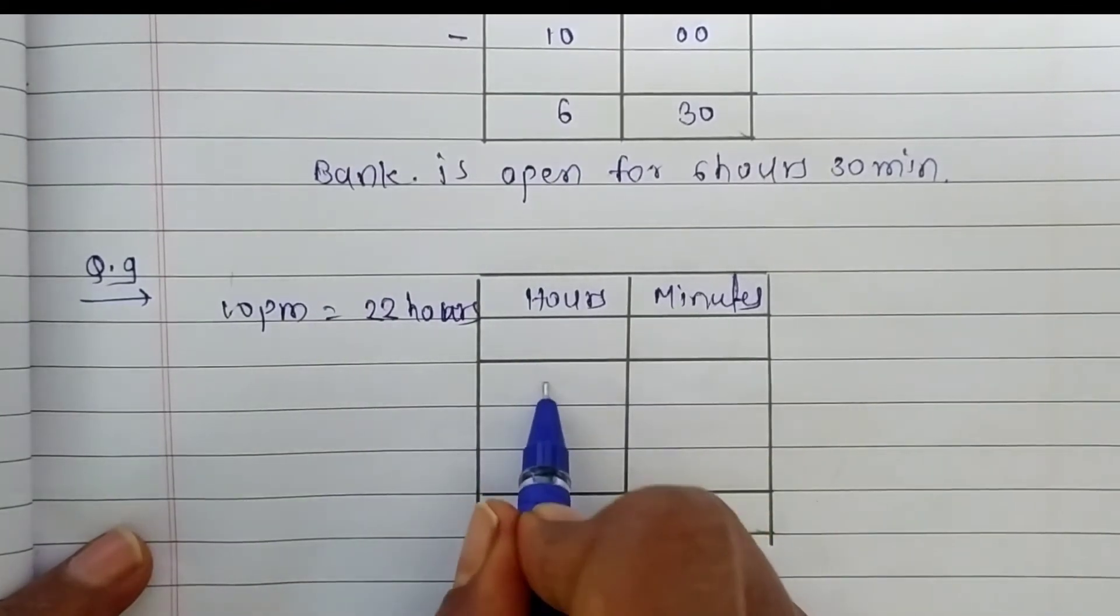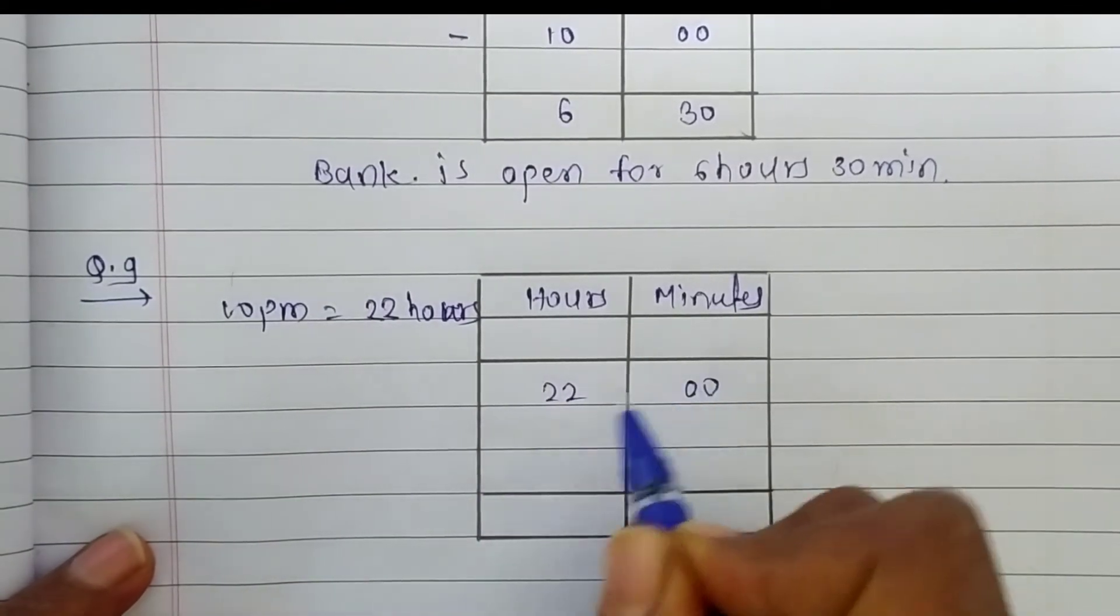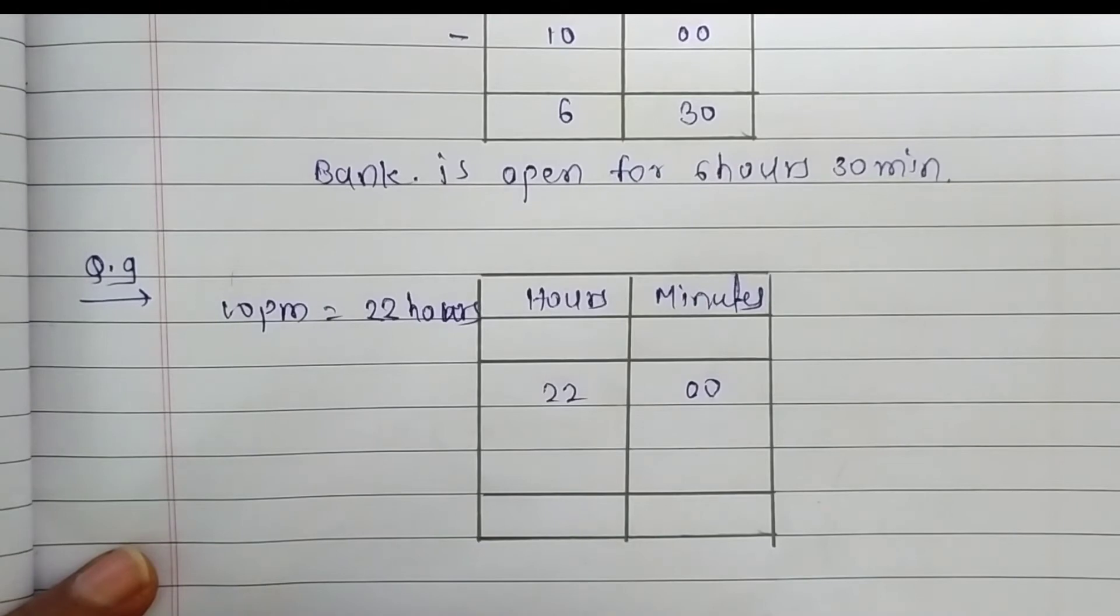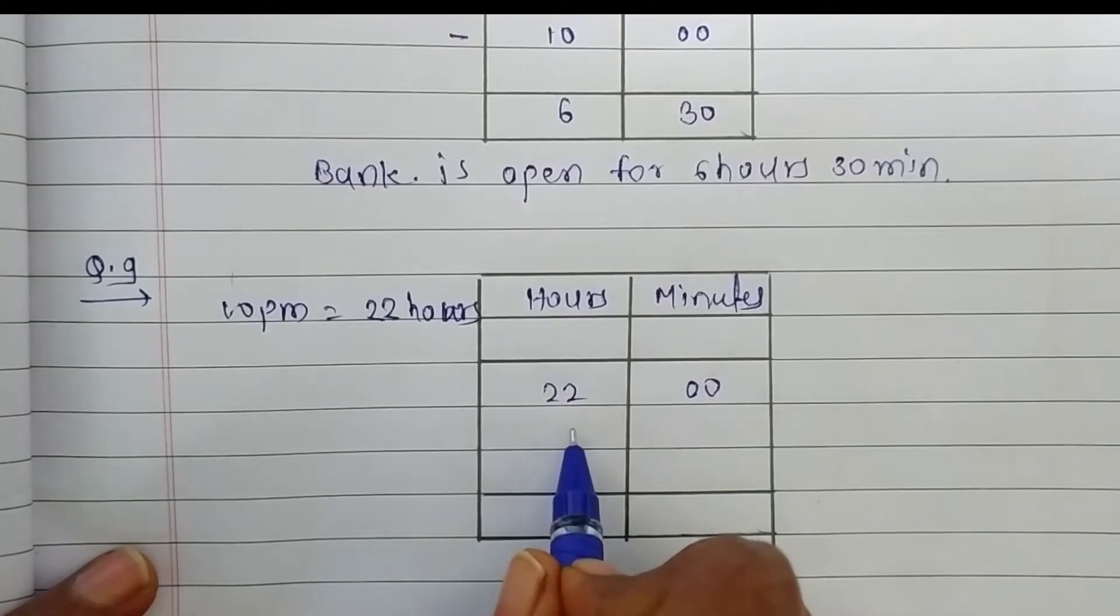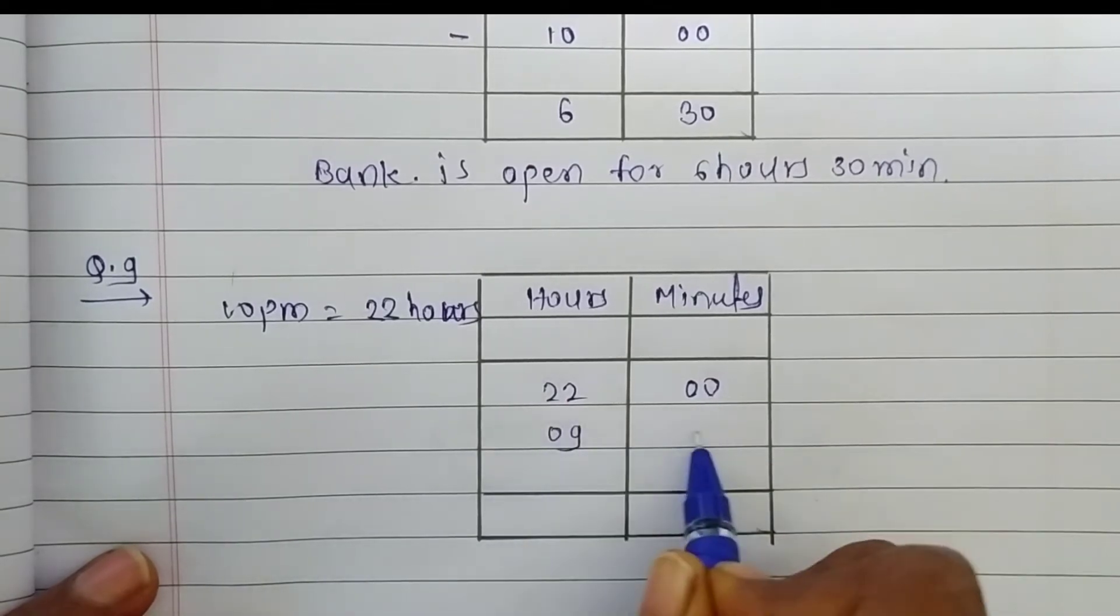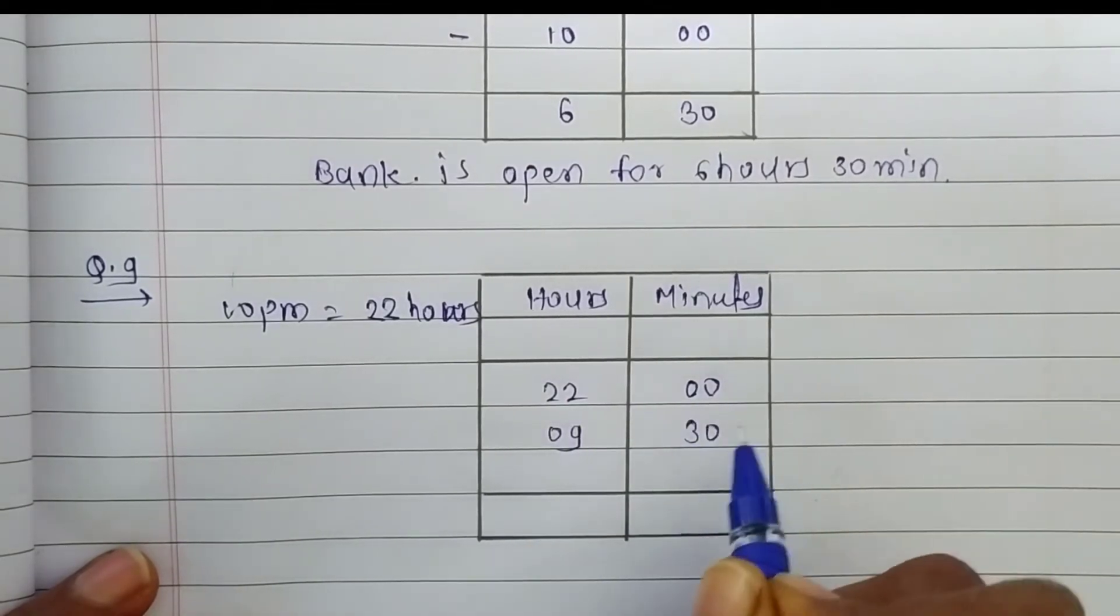Now, write here 22 hours and 0 minutes and in the morning, shop open from 9:30, so write here 9 hours and 30 minutes.